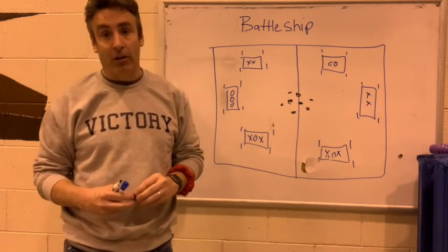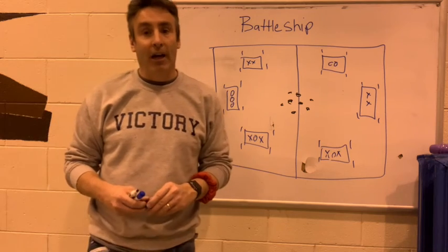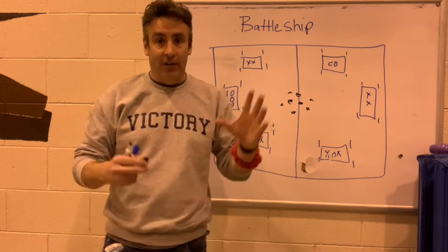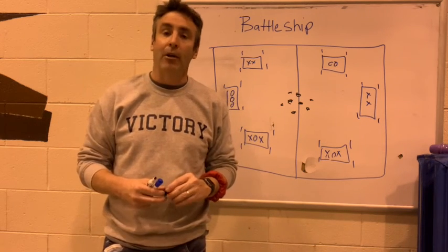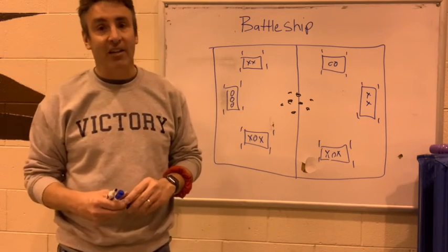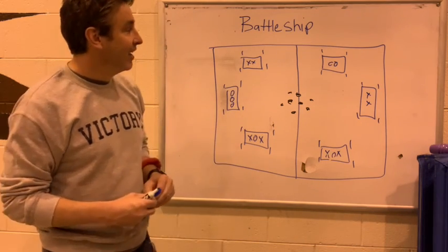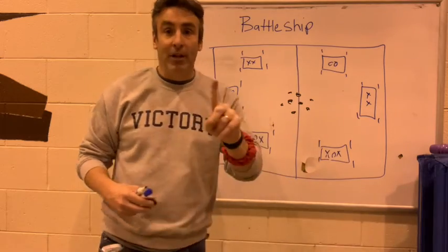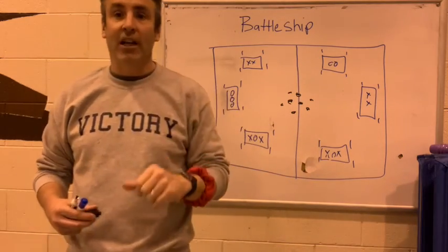The object of this game is for each battleship to knock down all four pins of the other battleships. I have a timer that the kids can see, a countdown timer that I put on a minute and thirty seconds. They play for a minute and thirty seconds. At the end of that time, if they have one pin standing they get one point. If they have four pins standing, they get four points.